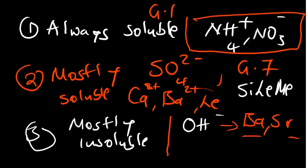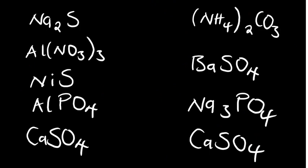Okay, now that we know the solubility rules, let's try to look at some examples. We have a group of compounds — let's try to identify whether they are soluble or insoluble. Starting with the first one: sodium sulfide. Sodium is in group 1, so if you apply the first rule — the things that are always going to be soluble — sodium is part of it. So we can therefore say that sodium sulfide is soluble, because all group 1 elements are always going to be soluble.